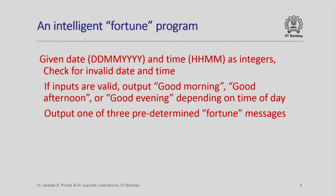Here is a specification of a slightly intelligent fortune program. This program is going to take date and time as integer inputs — the date in date-month-year format and the time in hour-minute format. It will first do a check for invalid date and time. If the inputs are valid, it will output one of three messages — good morning, good afternoon, or good evening — depending on the time of day, and after that it will print one of three predetermined fortune messages.